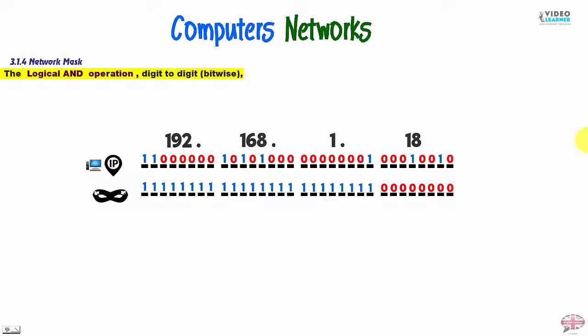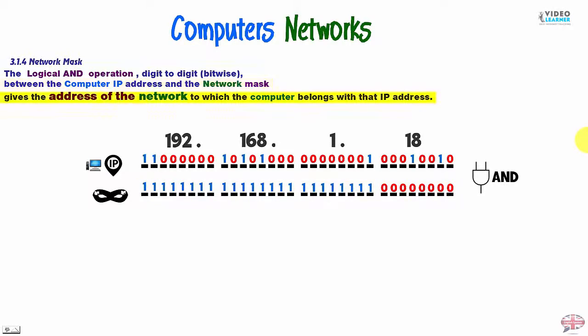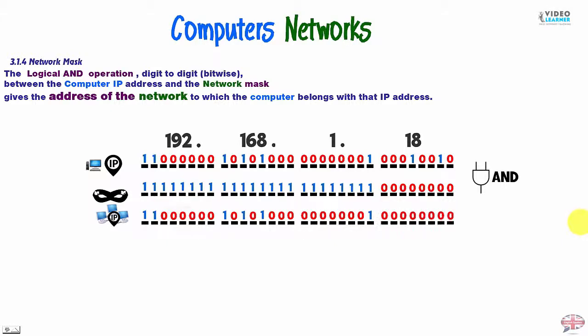Now, the logical AND operation digit to digit, as we say bitwise, between the Computer IP address and the Network Mask gives the address of the network to which the Computer belongs with that IP address. We do the AND operation and we have the IP of the network.